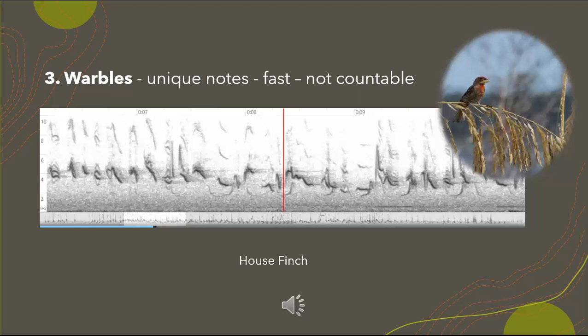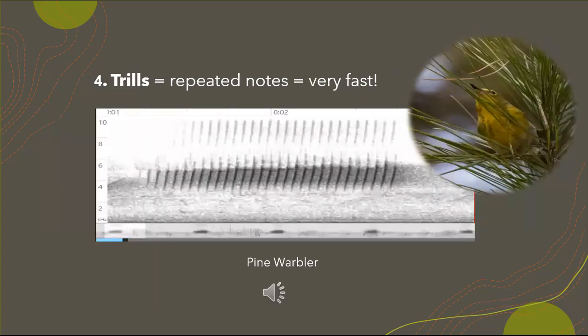Glenn is going for 24 — I'll be honest, I have not counted that one. Next: trills. Trills are fast, repeated notes — for the most part uncountable. Examples of birds that produce trills are chipping sparrows, juncos, worm-eating warblers, and pine warblers — which was our mystery bird. Here's the pine warbler.